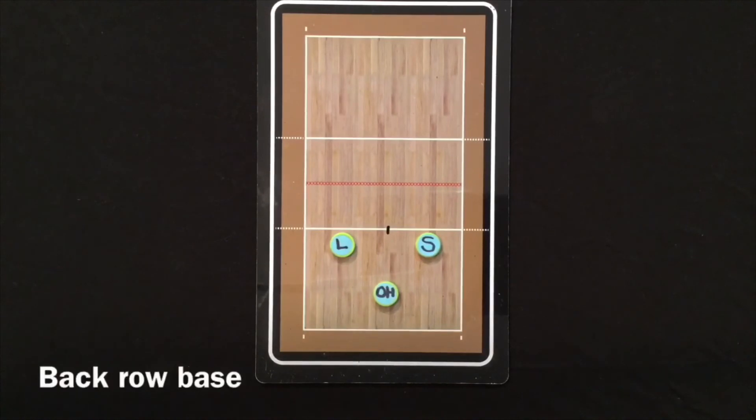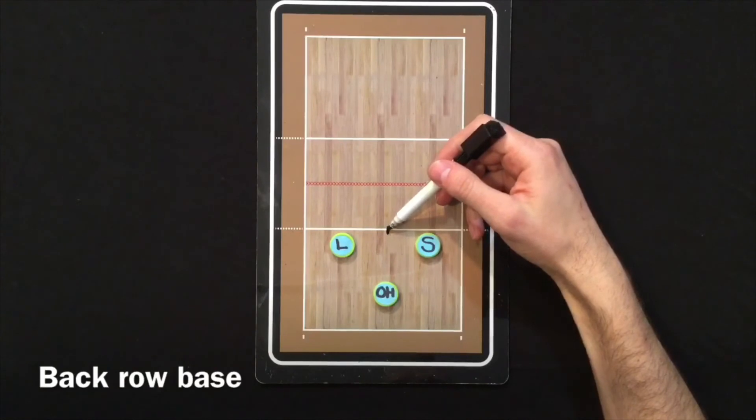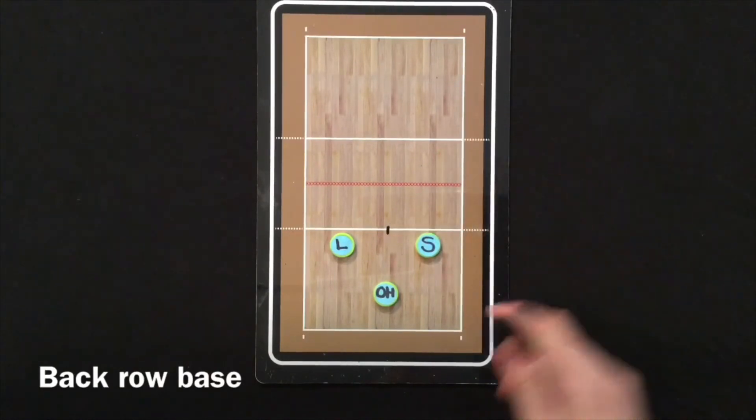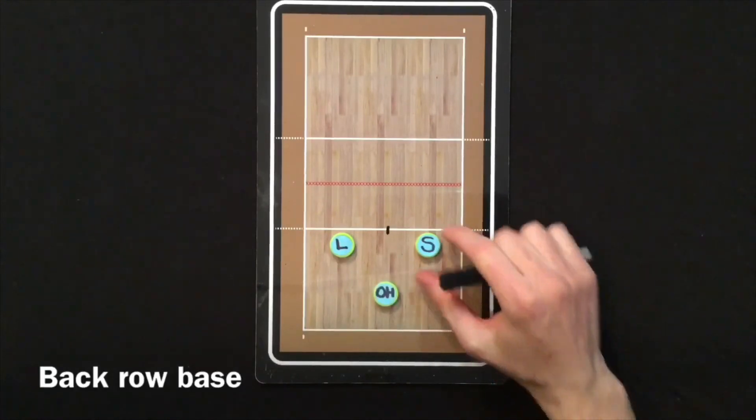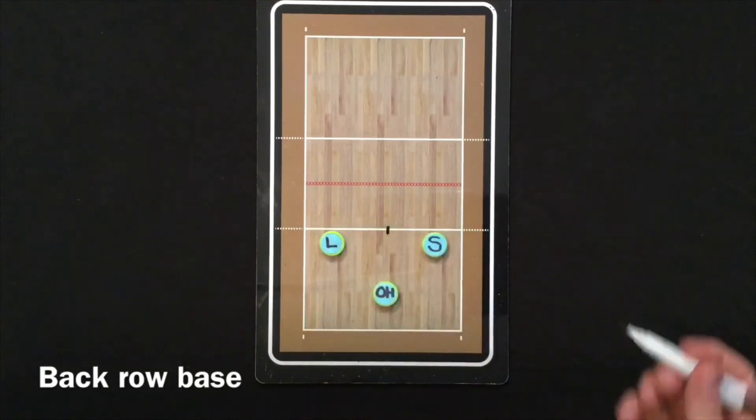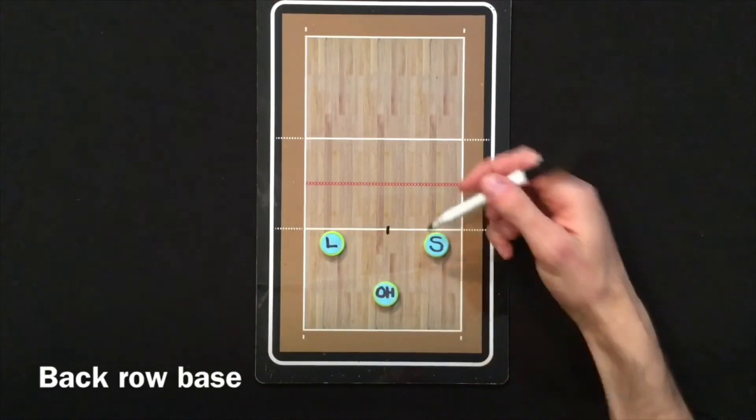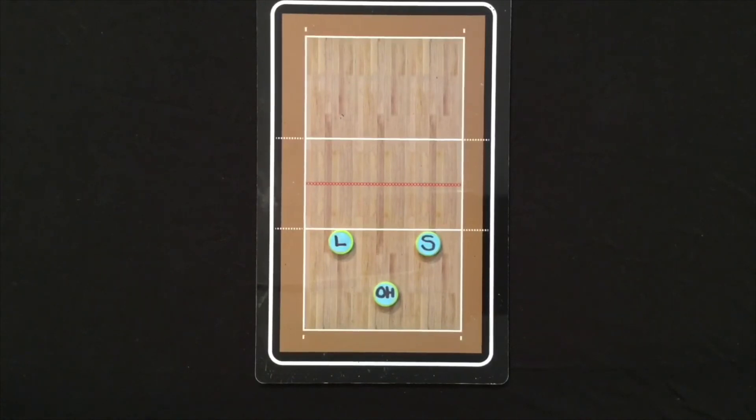Back row base: the wing defenders can either be equidistant between the imaginary center line and this sideline on both sides, or can be a little bit wider to protect your sideline and then anything that you need to play tends to be in front of you. Middle back is a few steps in from the end line but their main responsibility is corner to corner. So they are the only one responsible for these deep balls.